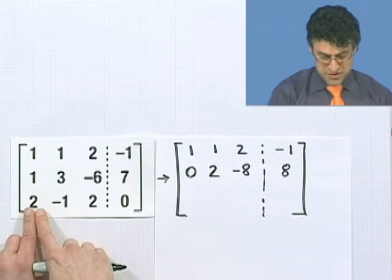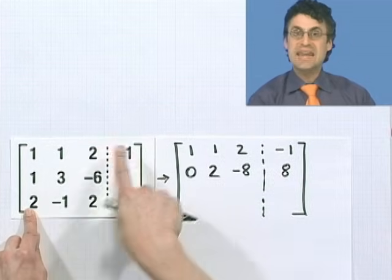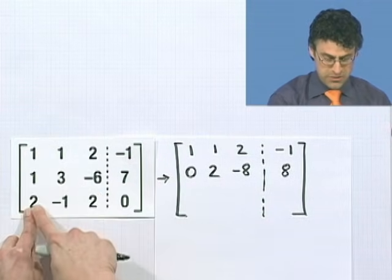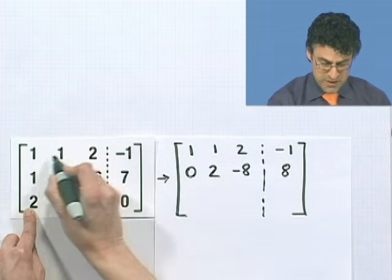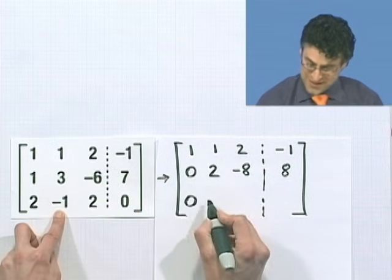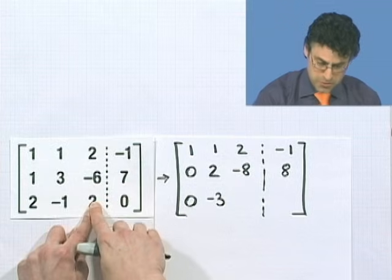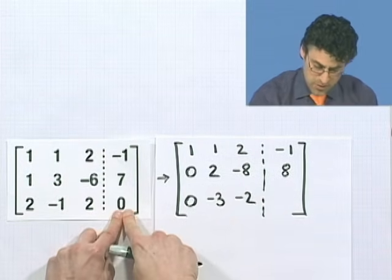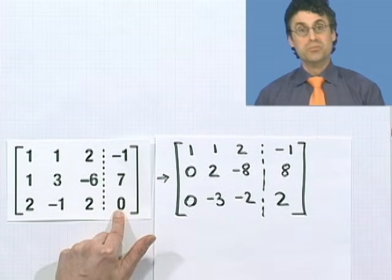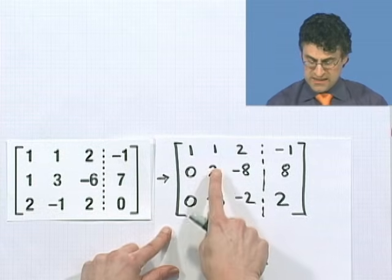Now what we want to do is produce a 0 here. We're going to take this row and multiply by negative 2, then add it to this. I get a 0 here. Then this is negative 2, so I have negative 1 and negative 2 is negative 3. Here I see 2 minus 4, which is negative 2. And here I get 0 minus negative 2, so I get 2.